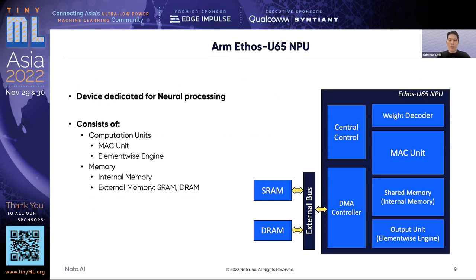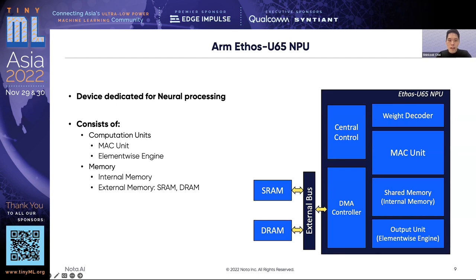Let's take a look at ARM Ethos U65 MPU. It is a micro-MPU which doubles the machine learning performance of Ethos U55 while maintaining U55's energy efficiency. We selected Ethos U65 as we believe it could help contribute to bringing AI everywhere. ARM Ethos U65 MPU is a microprocessor that specializes in the acceleration of neural network processing. It consists of MAC units and an element-wise engine as computation units, and its memory is divided into internal memory and external memory. In external memory, SRAM and DRAM operations are performed through an external bus.